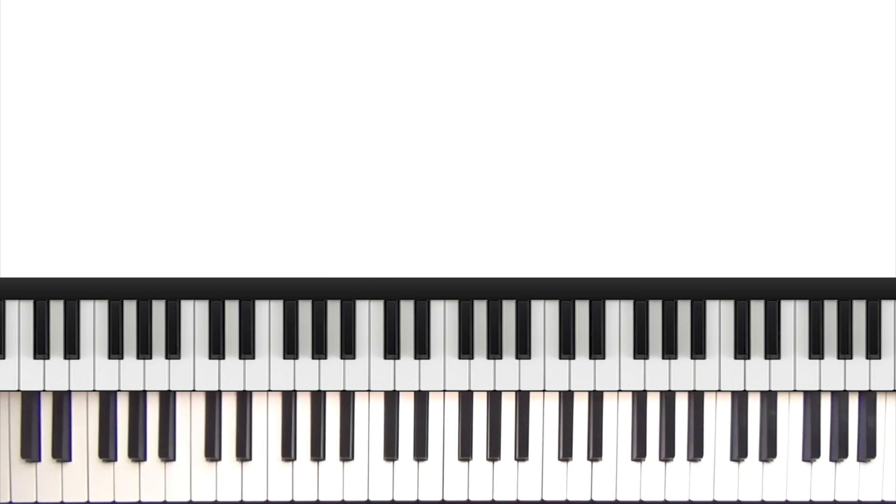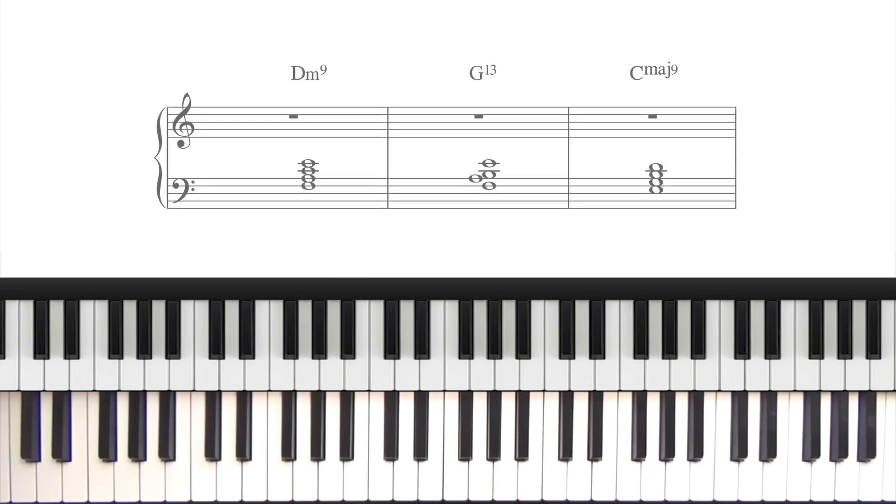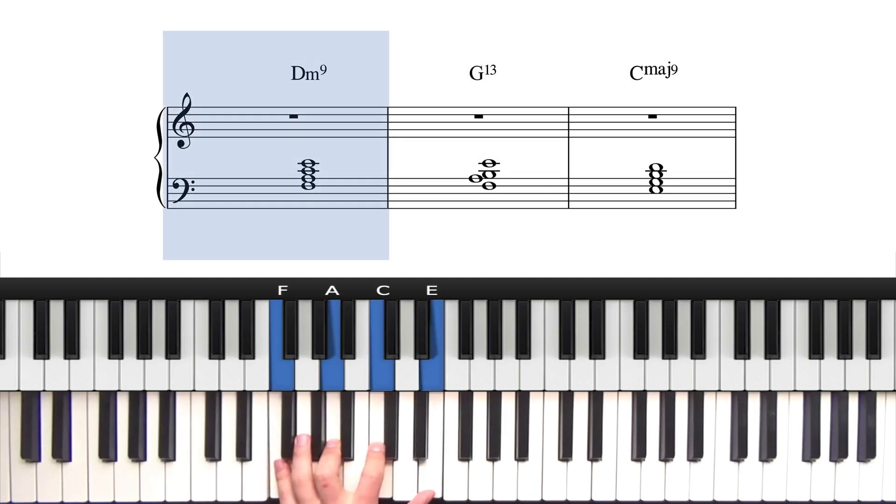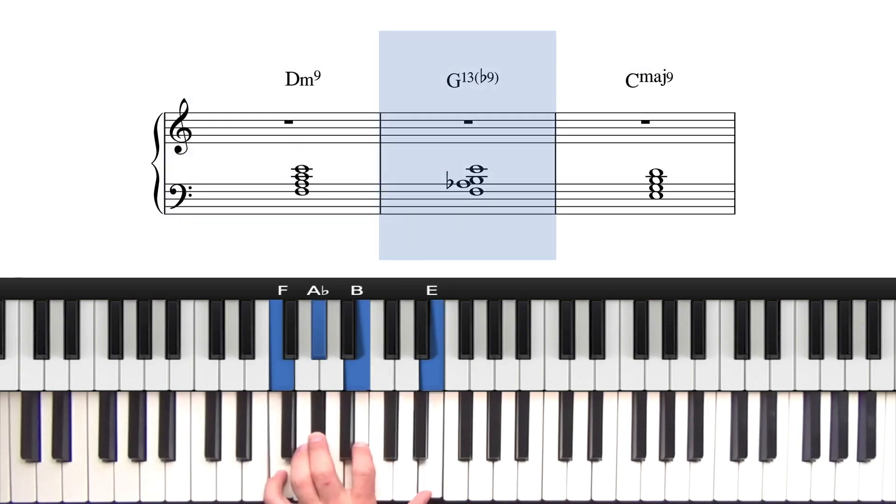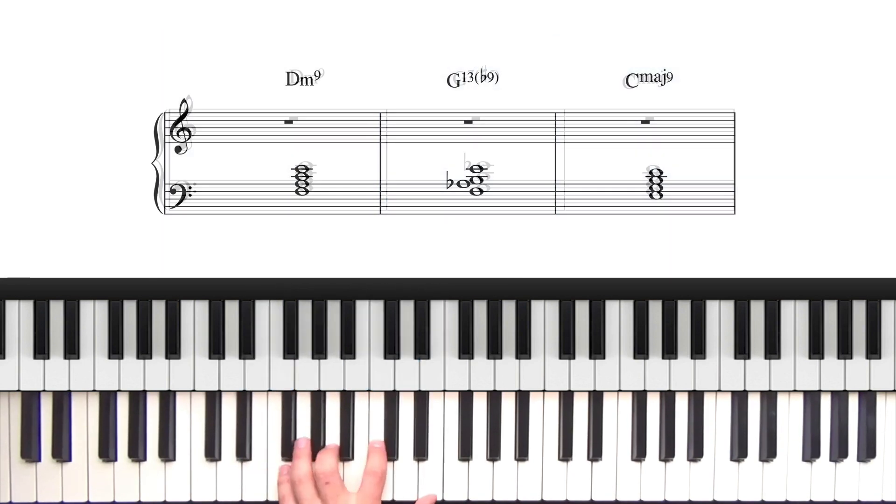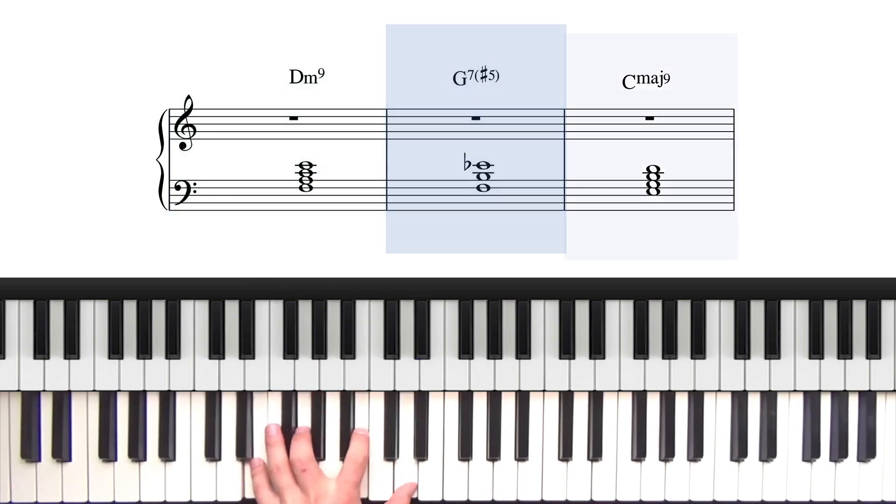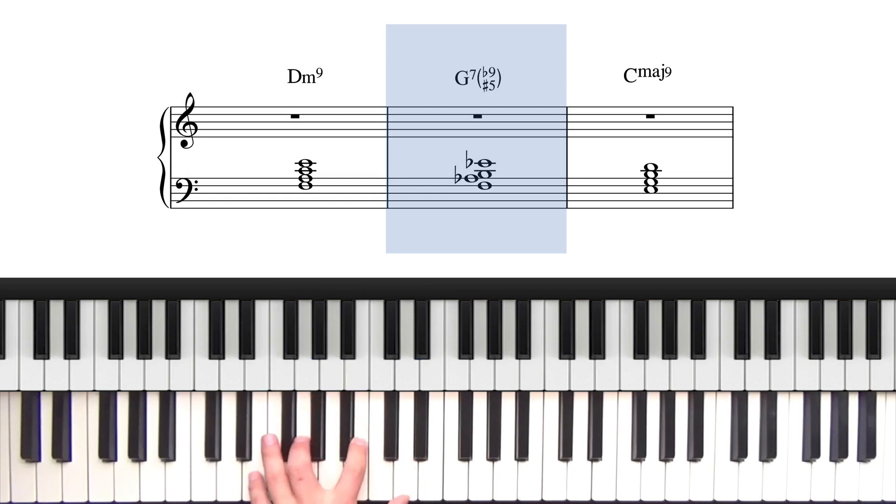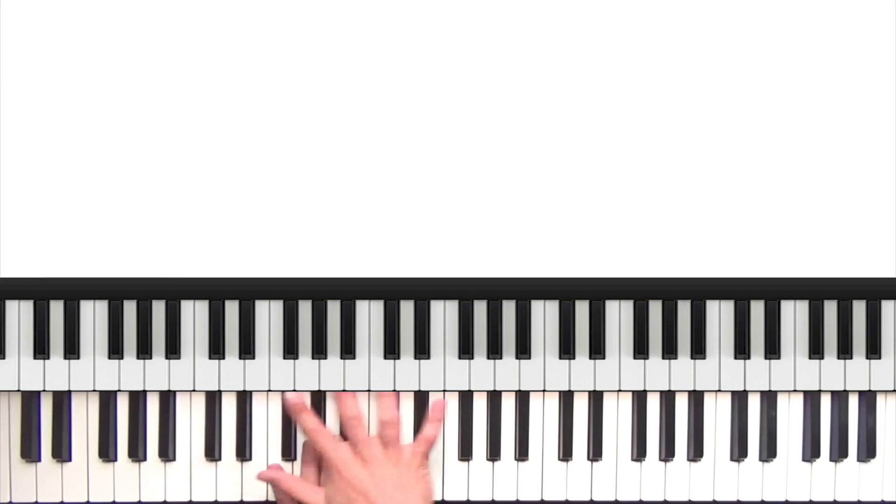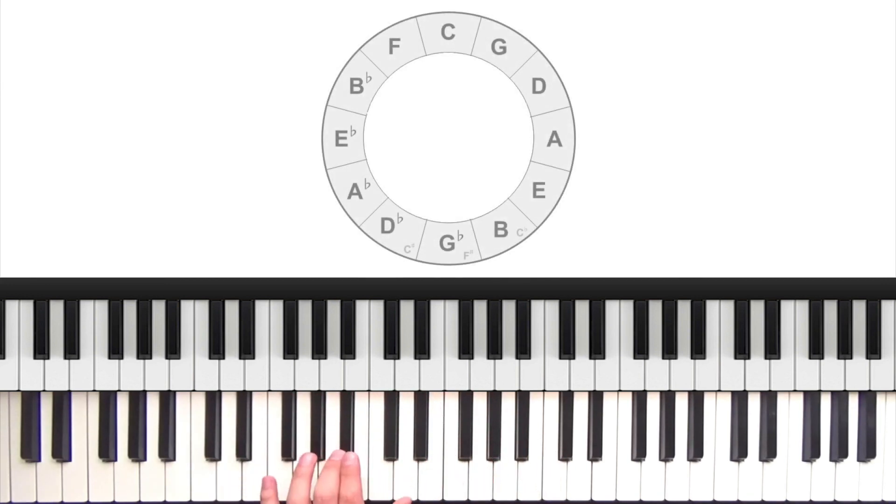Another variation on this drill is to play them with rootless left-hand voicings. So we can play a 2-5-1 in C major - D minor 9 rootless, G13 rootless, C major 9 rootless. Or we could also do flat 9, or we could do sharp 5, or we could do both. And so with the rootless voicings, remember that we always want to have them in this sweet spot of the piano. I'd always look, where is this voicing going to sound best? So for the C major, this one is in that sweet spot.